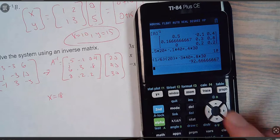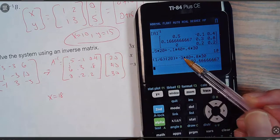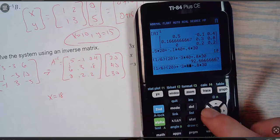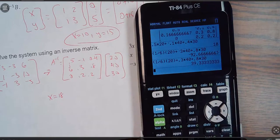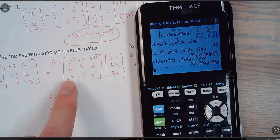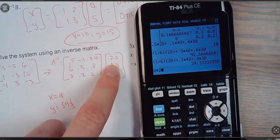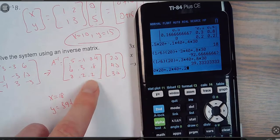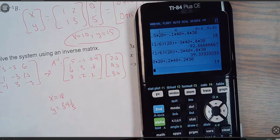That doesn't seem right. So that's 39 and a third. So y equals 39 and one third. And then 0 times 20, plus 0.2 times 40, plus 0.2 times 30. And I get 14.